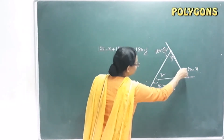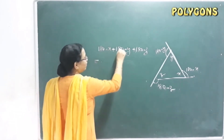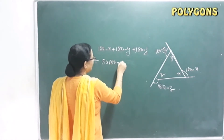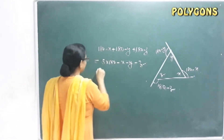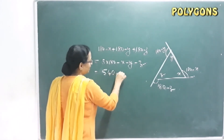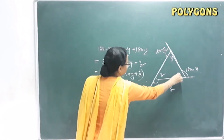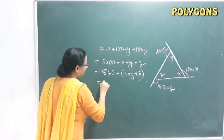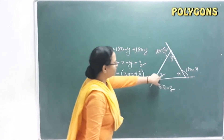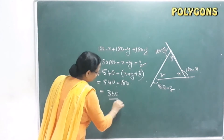That equals 3 × 180 minus (x + y + z), which is 540 − (x + y + z). Since x + y + z = 180 degrees, we get 540 − 180 = 360 degrees.